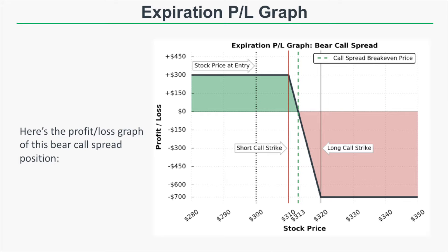As we can see, there's a capped loss potential of $700. If the spread is worth $10 at expiration, we have a loss of $7 per spread because we sold it for $3 — that comes out to a maximum loss of $700. Unlike a short call position where losses keep growing as the stock price increases, a short call spread has a defined loss potential.